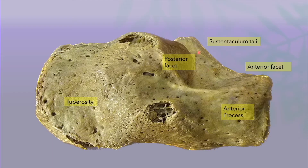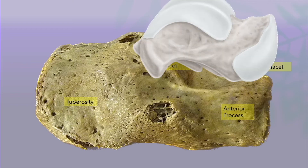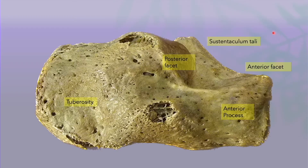On the medial side, this part is the sustentaculum tali. The anteromedial part of the talar head articulates with the sustentaculum tali. This is the anterior facet. The lower part of the talar head rests on this part. The talus is the curved bone. The major part of the talar undersurface articulates with the posterior facet. The anteromedial part articulates with the sustentaculum tali, and the inferomedial part of the talar head articulates with the anterior facet.